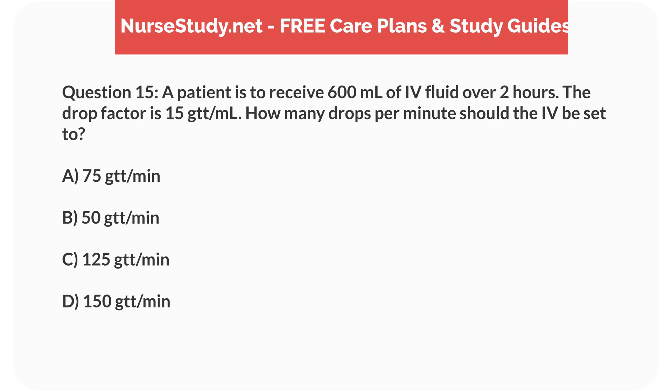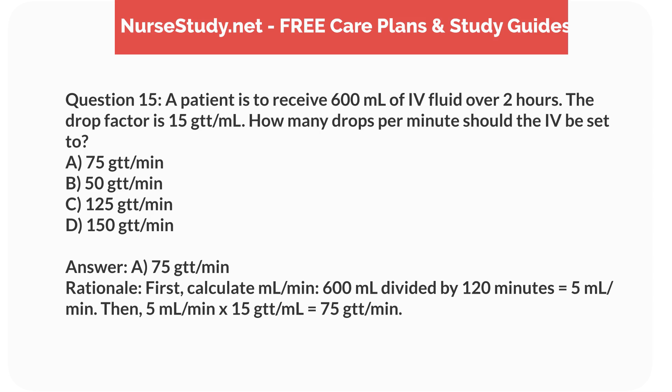Question 15. A patient is to receive 600mL of IV fluid over 2 hours. The drop factor is 15 drops per mL. How many drops per minute should the IV be set to? a. 75 drops per minute, b. 50 drops per minute, c. 125 drops per minute, d. 150 drops per minute. Answer: a. 75 drops per minute. Rationale: Calculate mL per minute: 600mL divided by 120 minutes equals 5mL per minute. Then, 5mL per minute times 15 drops per mL equals 75 drops per minute.